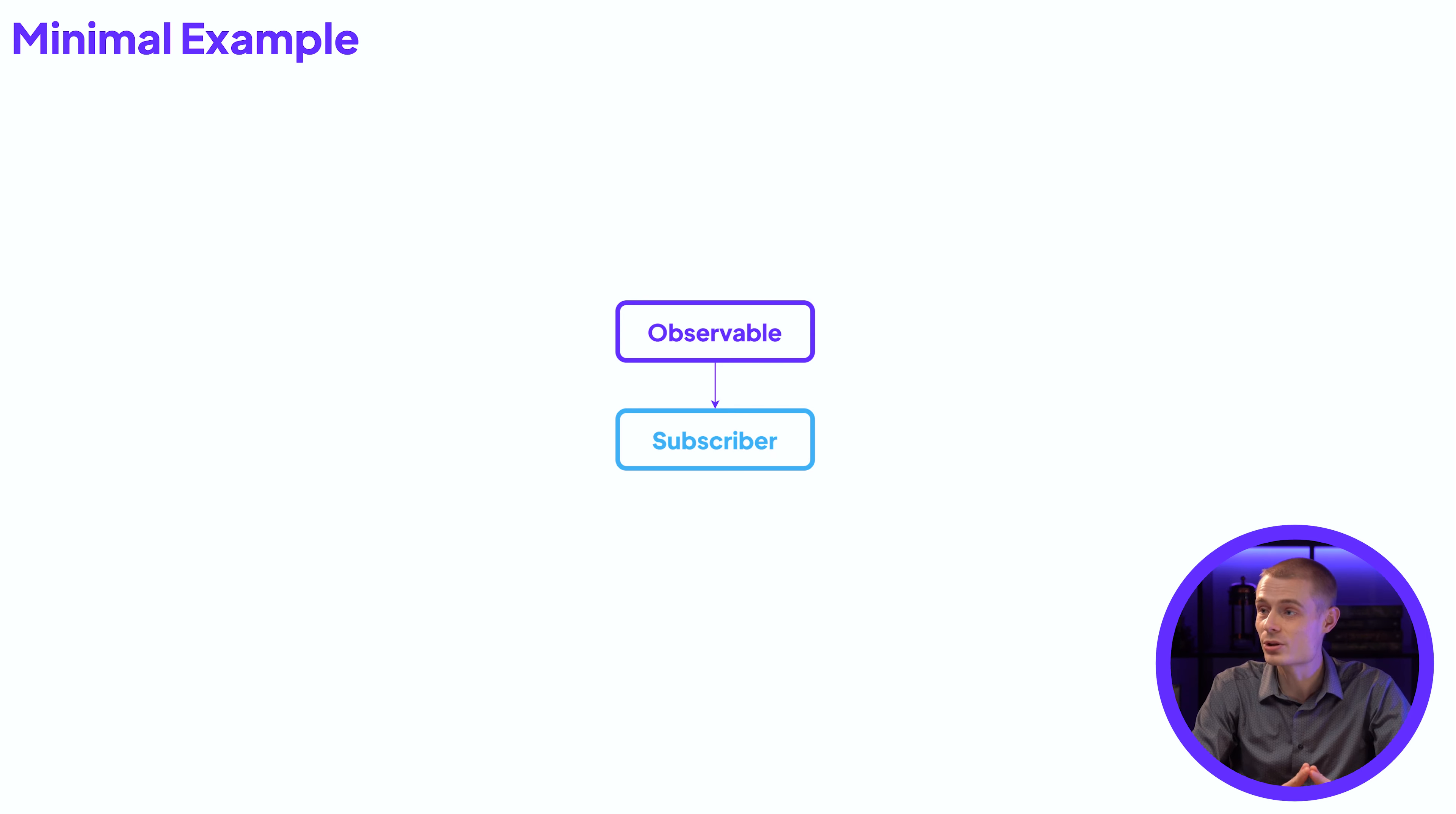Starting with a minimal example, let's take a look at a diagram showing the lifecycle of an RxJava application. As you can see, it sort of looks like a chain where you have one step going on to the next. Let's break this down a bit further.